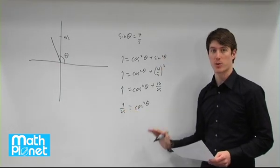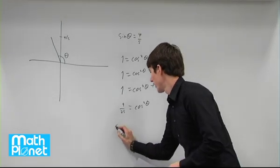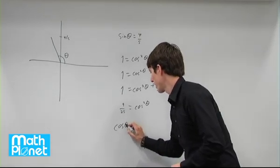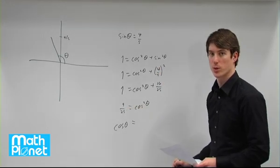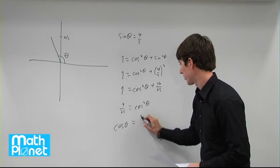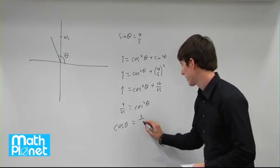Now I want to find cosine theta. So I just take the square root of both sides. So we have cosine theta is the square root of this, so the square root of 9 over the square root of 25. Square root of 9 is 3. Square root of 25 is 5.